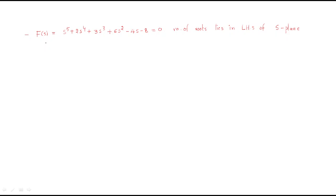Hello everyone. In this session we will discuss some more problems regarding the Routh-Hurwitz criteria. The problem is f(s) = s⁵ + 2s⁴ + 3s³ + 6s² - 4s - 8. The question asks for the number of roots that lie on the left-hand side of the s-plane.